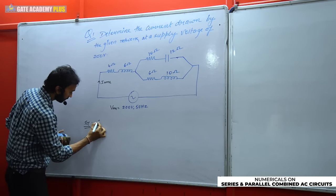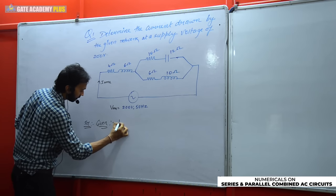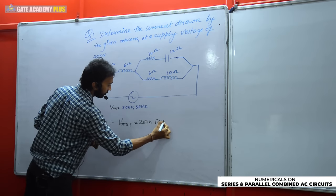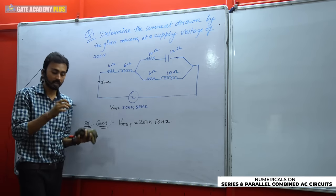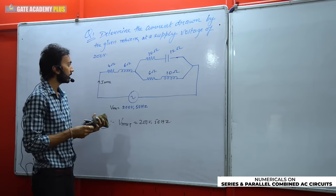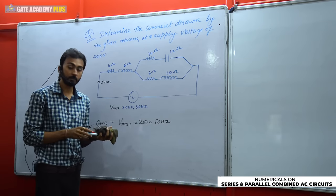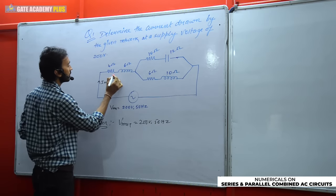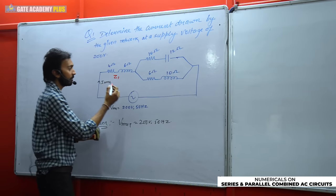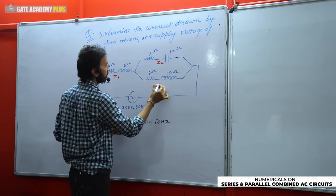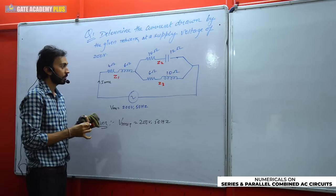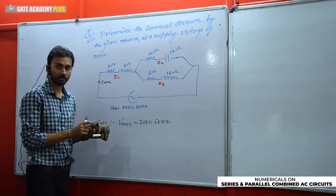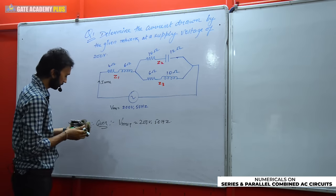Let's begin the solution. Given: V_RMS total = 200 volts at frequency 50 Hz. I will identify three branches and name them properly. Naming them helps me track each one. I am naming them Z1, Z2, and Z3. Now the three branch impedances Z1, Z2, and Z3 are on the board.